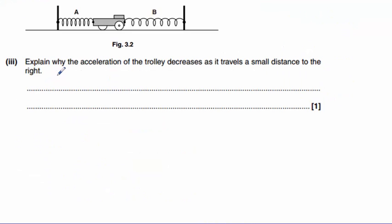Part three, explain why the acceleration of the trolley decreases as it travels a small distance to the right. Well, as the trolley moves to the right, the extension of force B will reduce. Therefore, because F equals Kx, the force will decrease as well. So we can say here the resultant force becomes smaller.